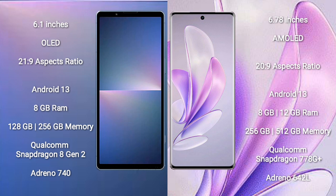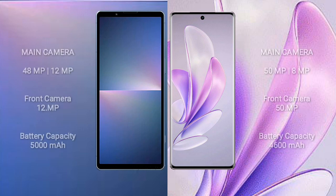Vivo A70 comes with 8GB RAM or 12GB RAM and 256GB internal storage, Qualcomm Snapdragon 778G Plus processor, and GPU Adreno 642L. Sony Xperia 5 Mark 5 has a rear dual-camera setup of 48MP plus 12MP and a front camera of 12MP.